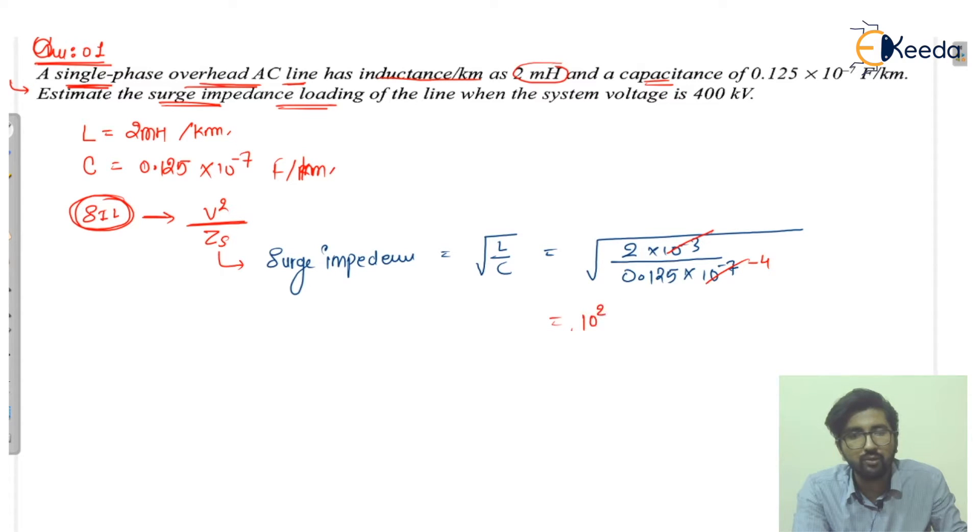After cancelling out, you will get 10 raised to power minus 3, 10 raised to power minus 7, 10 raised to power minus 4, then it is coming out to be 10 raised to power 2. Inside root you are getting 2 upon 0.125, and it is coming out to be 400 ohm.